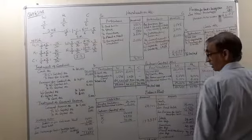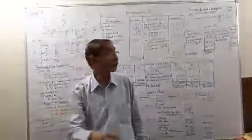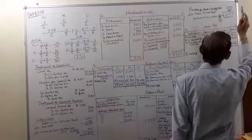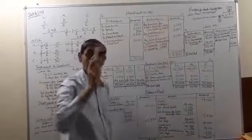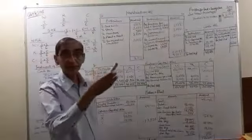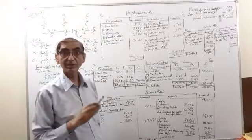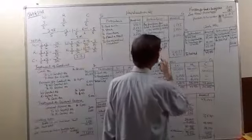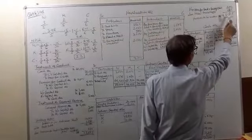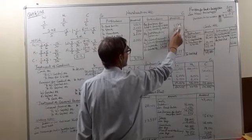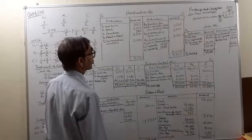Provision for bad debts as per balance sheet is 2,000 and the new provision is 825, so the old provision of 2,000 has reduced to 825. This means provision for bad debts of rupees 1,175 will be written off. Provisions are liabilities — shown on the liability side or subtracted from debtors. A decline in liability is credited, so 1,175 will be credited for provision for bad and doubtful debts.